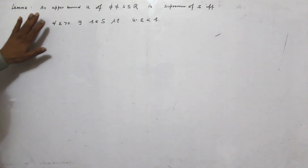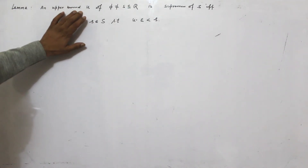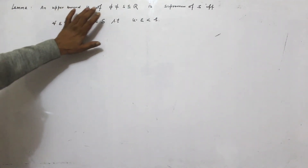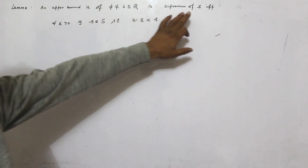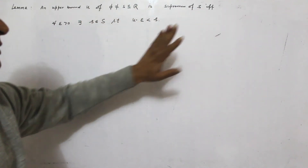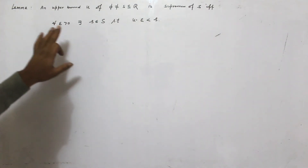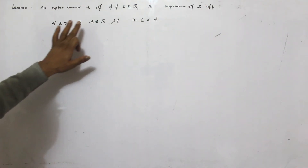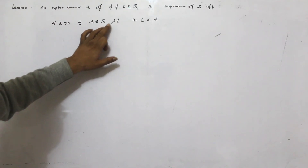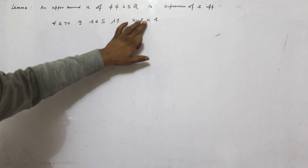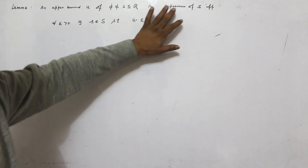So we prove this lemma: an upper bound U of a non-empty subset S of ℝ is the supremum of S if and only if for all ε > 0 there exists s in S such that U minus ε is less than s.